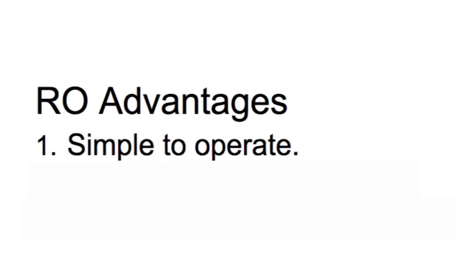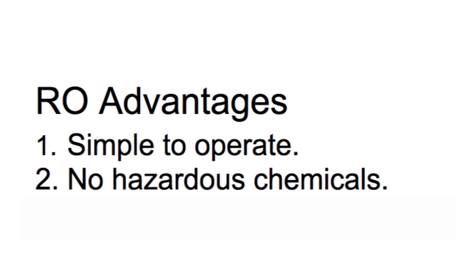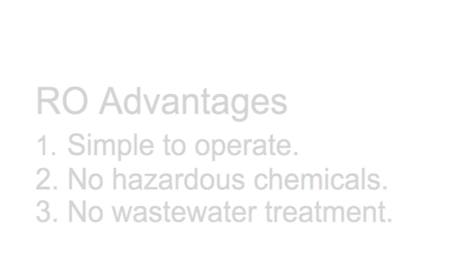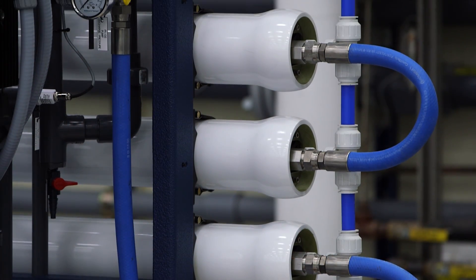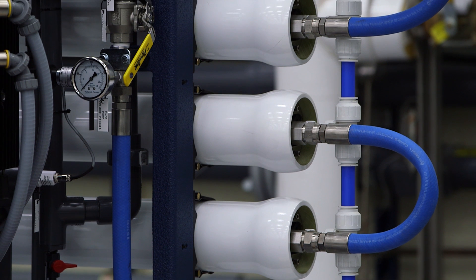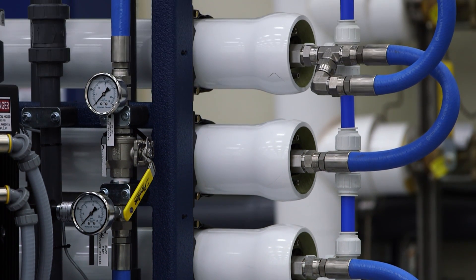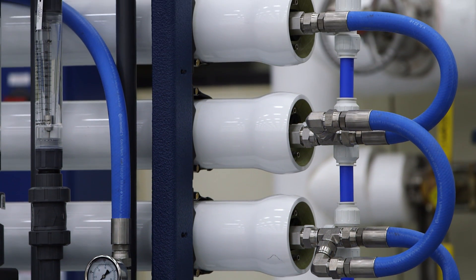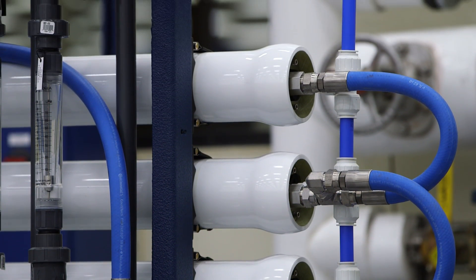Why do commercial or industrial customers choose RO for water purification? RO systems are relatively simple to operate. Hazardous chemicals are not required, and wastewater treatment is not required. If the dissolved solid levels in the water supply is greater than 250 milligrams per liter, an RO system is less expensive to operate than a deionization system. If the dissolved solids level is between 150 and 250 milligrams per liter, enhanced water recovery systems may make an RO system less expensive to operate than a deionization system.